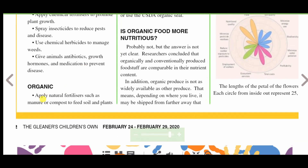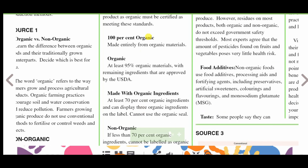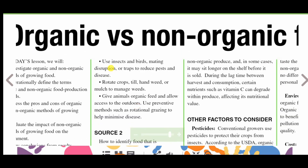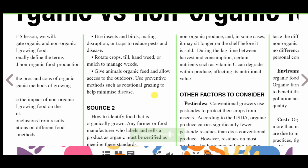Organic farmers apply natural fertilizers such as manure or compost to feed soils and plants. They use insects and birds, mating disruptions, or traps to reduce pests and disease. They rotate crops, till, handweed, and mulch to manage weeds. They give animals organic feed and allow them access to the outdoors, and use preventative methods such as rotational grazing to help minimize disease.